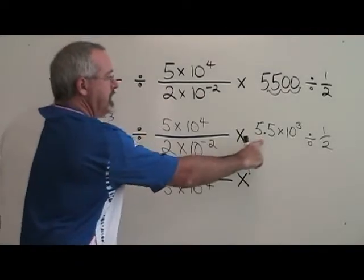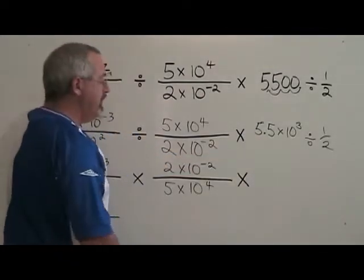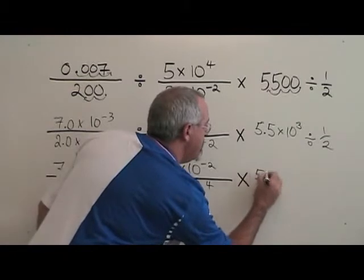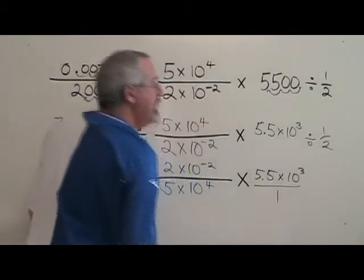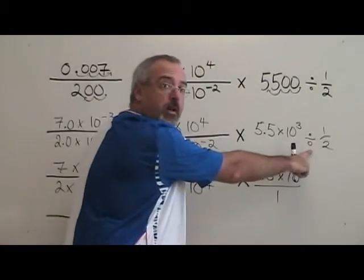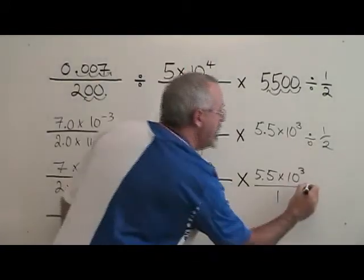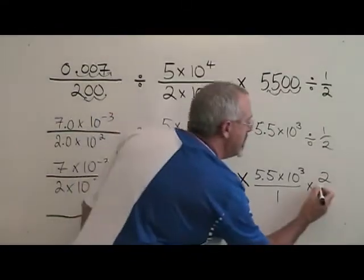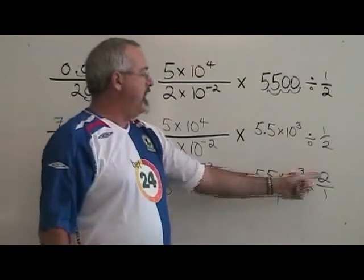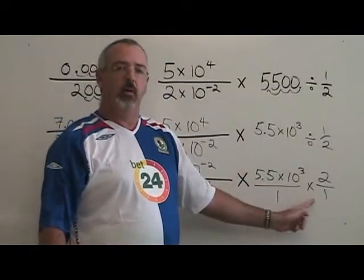Now I'm going to express 5.5 times 10 to the 3 as a fraction simply by putting it over 1. And again, I'm dividing a fraction. Divided by a half, that means times 2. And I want that expressed as a fraction so I also put the 2 over 1. Dividing by 1 half is the same as multiplying by 2 over 1.